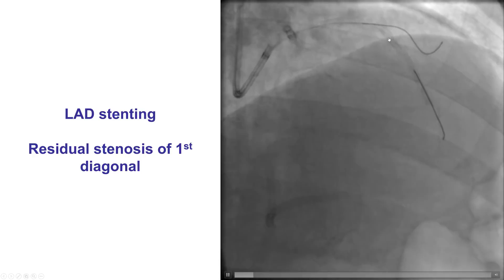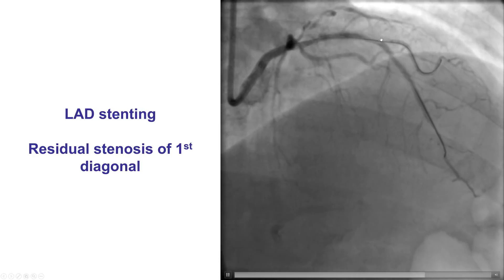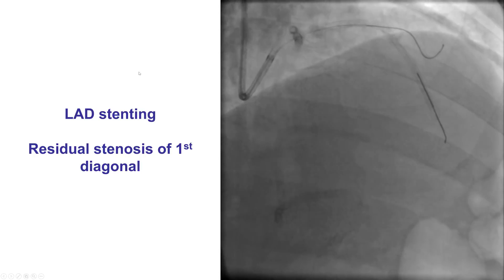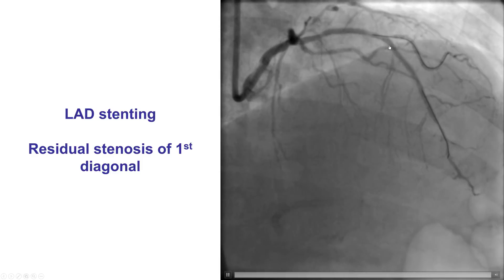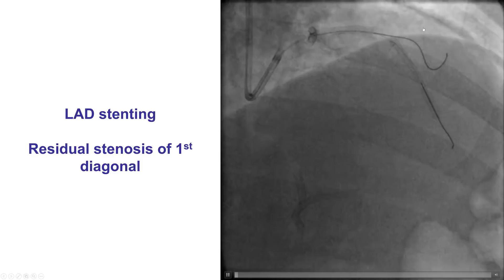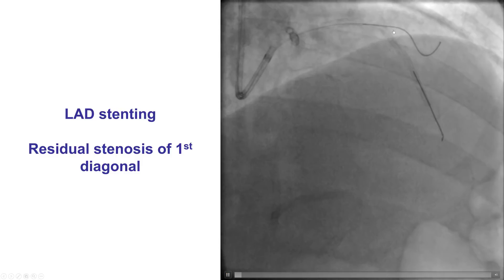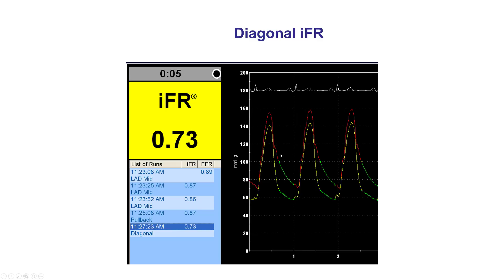The question remains: is the lesion at the diagonal ostium more severe and does it require treatment? One way to decide is to do multiple projections; however, determining the significance can be difficult, which is why we did an IFR. We advanced a pressure wire into the diagonal branch and obtained an IFR of 0.73, suggesting significant ischemia. Given that this is a large branch, we decided that we needed to treat it.